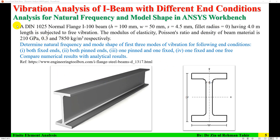The beam is DIN-1025 normal flange I-100 beam. Its overall depth is 100 mm, overall width is 50 mm, and the thickness of webs and flange is 4.5 mm, and the fillet radius is 0. Its length is 4 meters and it is subjected to free vibration. The modulus of elasticity, Poisson's ratio, and density of beam materials are 210 GPa, 0.3, and 7850 kg/m³.